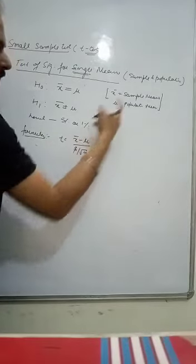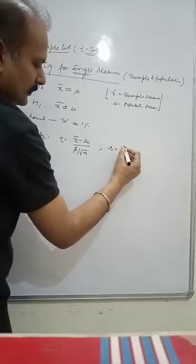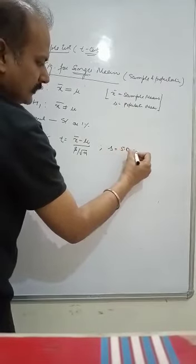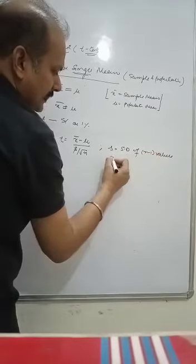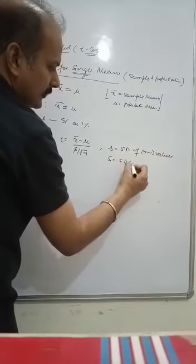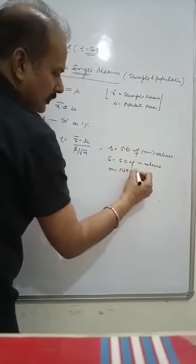Now, x bar is sample mean, mu is population mean. Small s, I used here a symbol for standard deviation of n minus 1 values, whereas capital S will be used for standard deviation of n values. And n is the number of items or number of items.